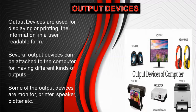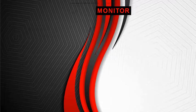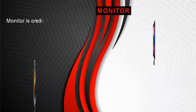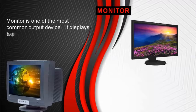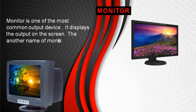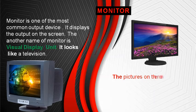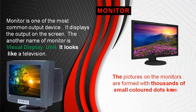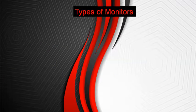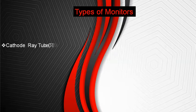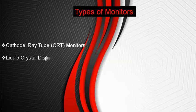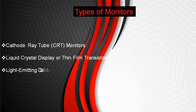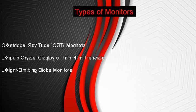We can see some devices on the screen. Now we talk about monitor. Monitor is a very common output device which is used for displaying output on the screen. The other name of monitor is visual display unit. It looks like a television. The picture on the monitor is formed with thousands of colored dots. These dots are known as pixels. We have three categories of monitor: first is CRT monitor (cathode ray tube), second is LCD (liquid crystal display), and third is LED (light emitting diode).